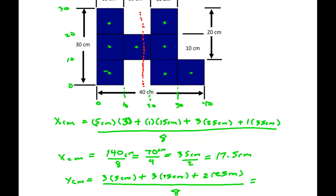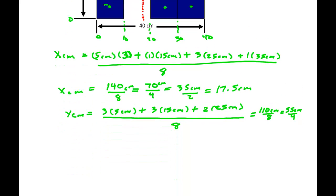Calculating: three times 5 is 15, three times 15 is 45, that's 60, and two times 25 is 50, giving 110 over 8, which equals 55 over 4 centimeters, or 13.75 centimeters.